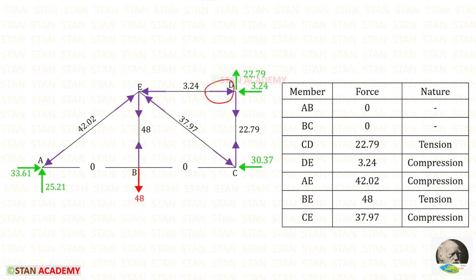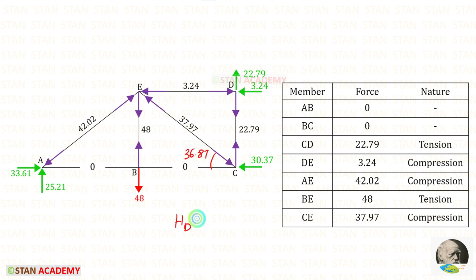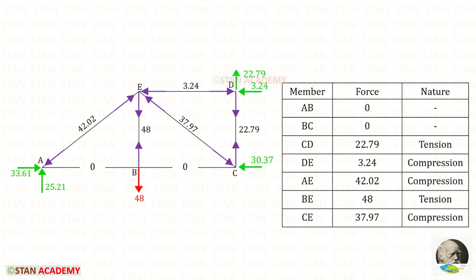Applying sigma H = 0 we find Hc. Alternatively, Hd equals 37.97 × cos(36.87°) = 30.37. Now we are going to end this session. Thank you for watching this video.